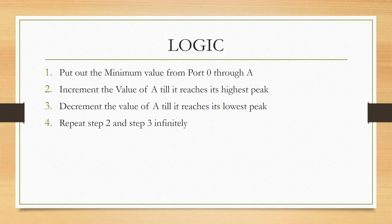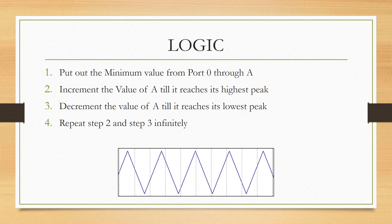Once this is done, I have generated one complete positive peak and the transition from positive peak to negative peak. Steps 2 and 3 will be repeated to generate a triangular wave, which should look like what is being shown in this particular image. Now that we have understood the logic, let us try writing the ALP to generate a triangular wave.